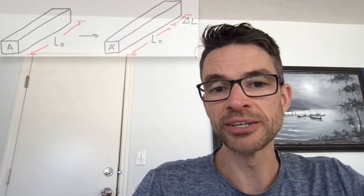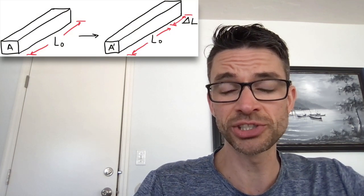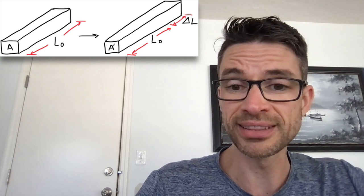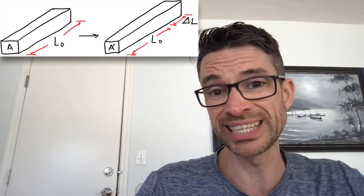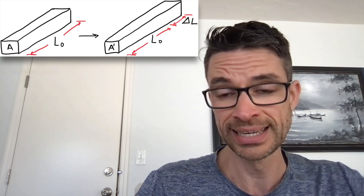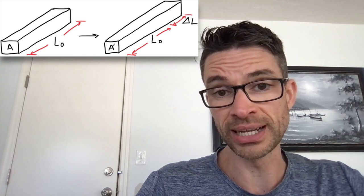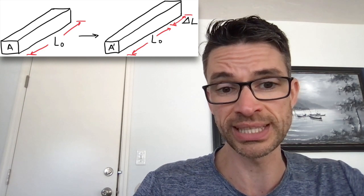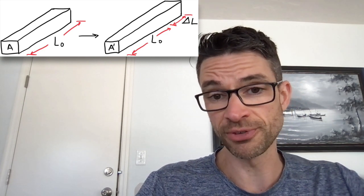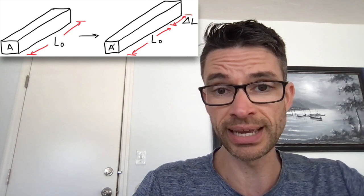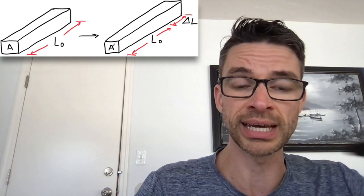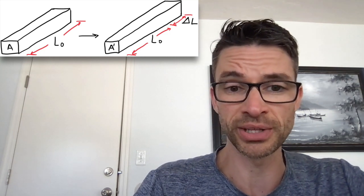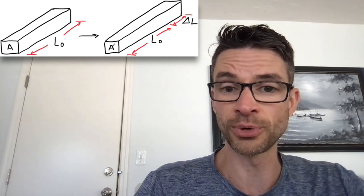Stress is defined as force divided by the cross-sectional area of the workpiece, and strain is the fractional increase in length — delta L over L0 — sometimes expressed as a percentage. If you plot force versus displacement and know the dimensions of the material, you can easily convert that into a stress versus strain curve. Here's an example of a stress-strain curve you might get for a polymer.